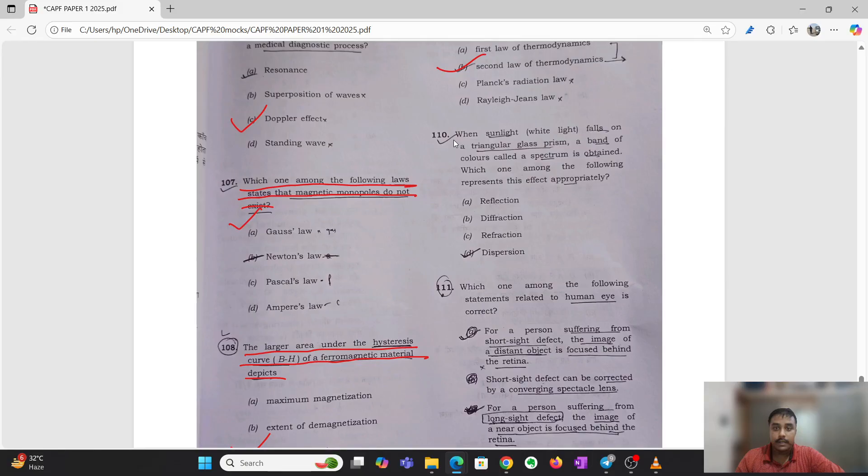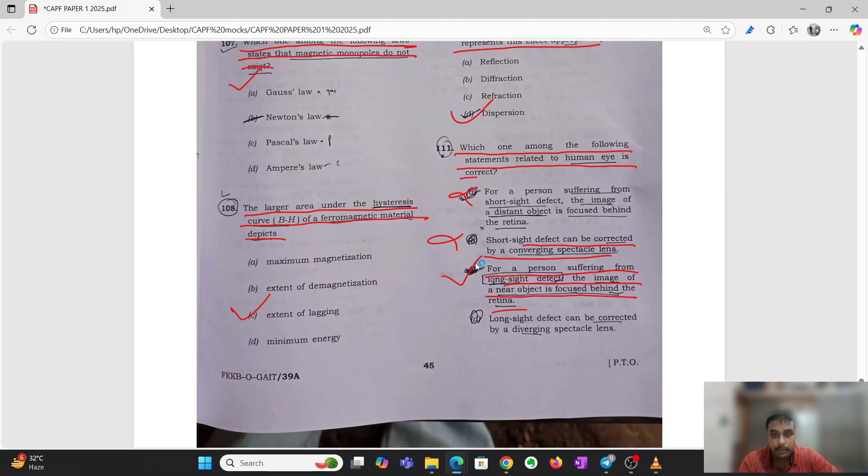Which one among the following statements related to human eye is correct? For a person suffering from short sighted defect, the image of object is focused behind retina, this is totally wrong. Image is in front of retina. Short sighted defect can be corrected by converging spectacle lens, totally wrong, diverging, what is called concave lens. For a person suffering from long sighted defect, the image of a near object is focused behind the retina, this is totally wrong. Long sighted defect can be corrected by a converging convex lens.